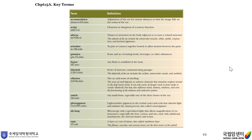Ossicle is any small bone, especially one of the three bones of the ear. Photopigment is a light-sensitive pigment in the retinal cones and rods that absorbs light and initiates the visual process, also called visual pigment. Slit lamp is a microscope with a specialized light that allows magnification of eye structures, especially the lens, cornea, and iris, with additional attachments to vitreous humor and retina. Tunic is a layer or coat of tissue, also called the membrane layer.